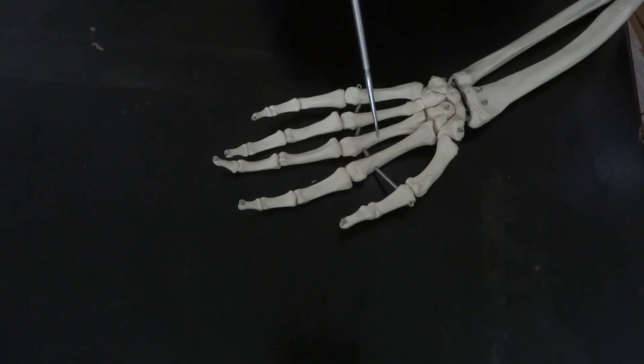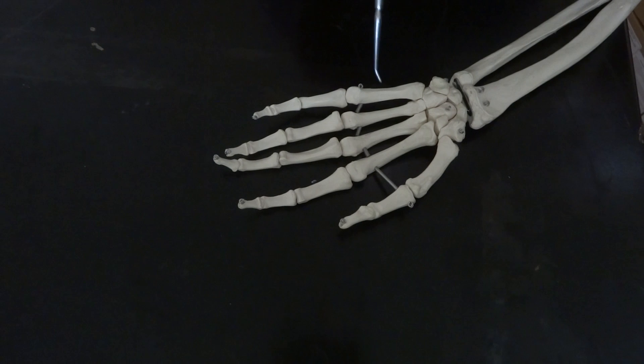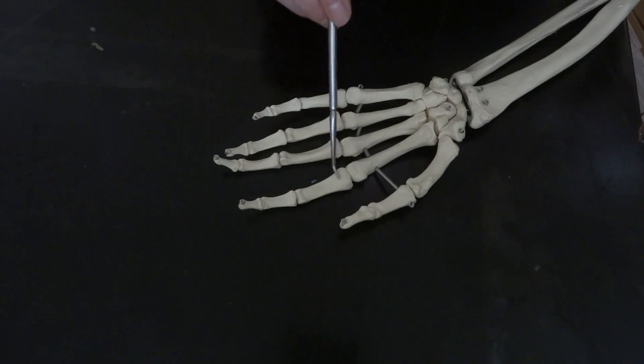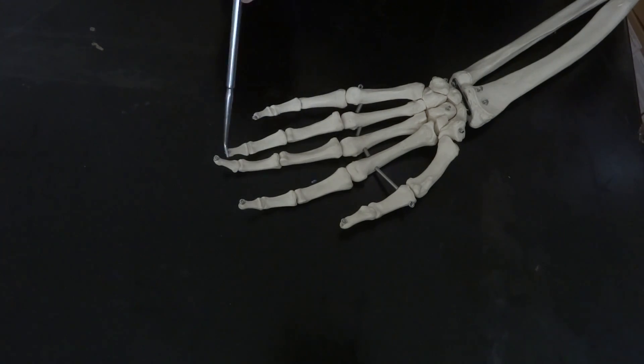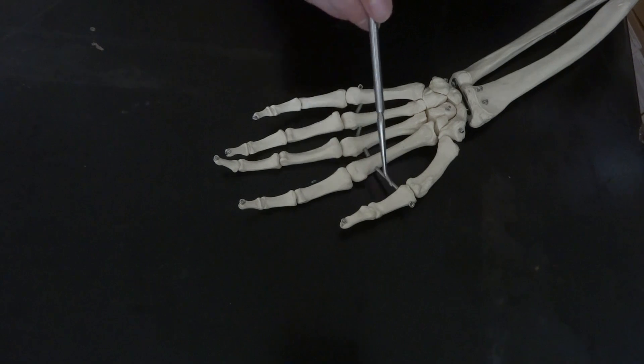And those are going to be named in order basically starting with the thumb. So again, thumb is number one, your pointer finger two, middle finger three, ring finger four, pinky finger five. The same is also true of your phalanges, which are going to be more distal from the metacarpals. And on the phalanges, for most of your fingers there are three bones except for your thumb. Your thumb only has two, there is a proximal phalange and then a distal phalange.